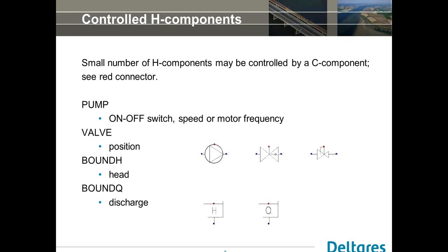You cannot control all components - you can only control what we call the active components. You can recognize them either by looking at the help, or you can look at the control connection point. If it's red, as you can see here, for example the pump has a red connection point, then it's active and you can control the speed. For a valve, you can control the valve position. And for a Q-bound, you can control the discharge.